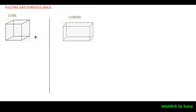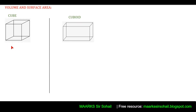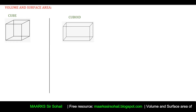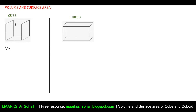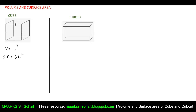A cube is comprised of six plane surfaces which are all squares, so all sides are equal. The volume of a cube is l³ and the surface area is 6l². The surface area is 6l² because it has six plane faces, each with area l². The length, breadth, and height are all l, so the volume is l × l × l.